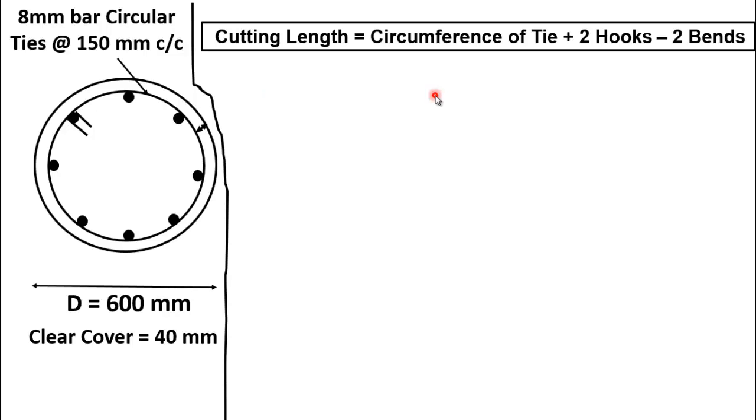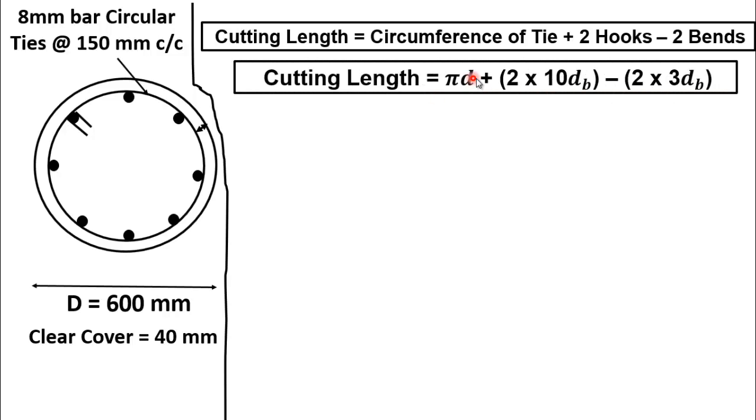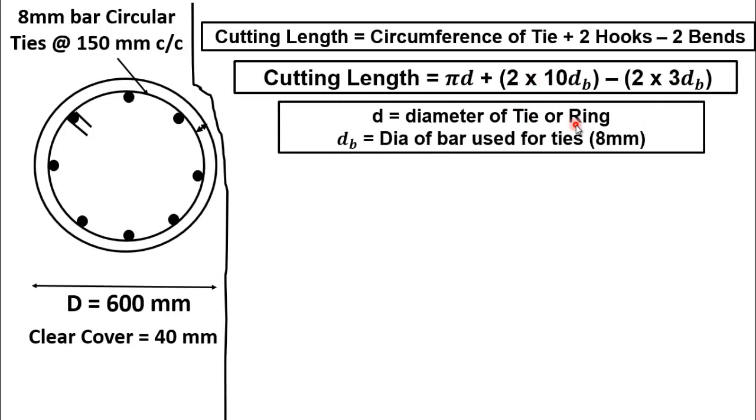As we know that circumference of a circular section is equal to πd or 2πr. And according to codes, the length of one hook is equal to 10d_b. And for each bend, we provide 3d_b. Here d is the diameter of tie or ring and d_b is the diameter of bar used for the tie. Here the diameter of bar is 8 mm.